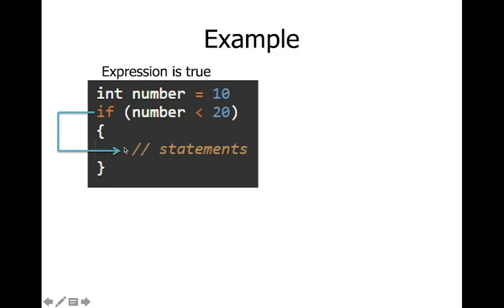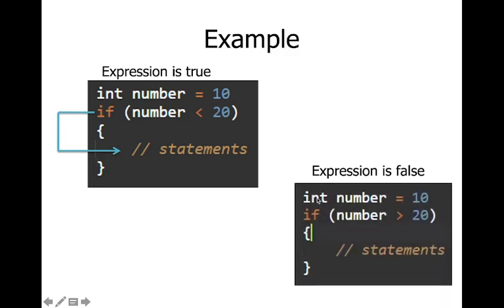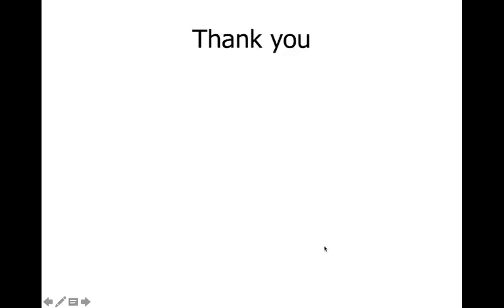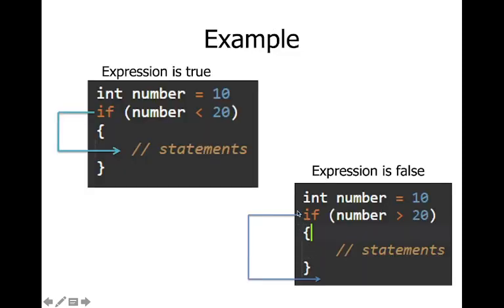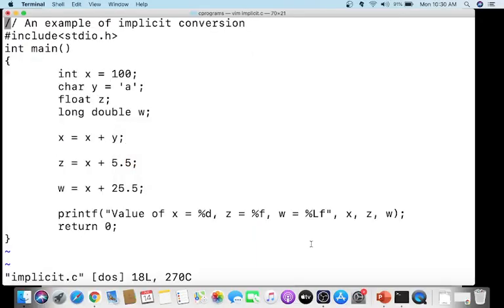When the condition is true, execution goes inside the brace and executes all the statements. If we instead check 'number > 20' with number equal to 10, that is false — it returns zero — so nothing inside the brace is executed and execution skips to the next statement after the brace.